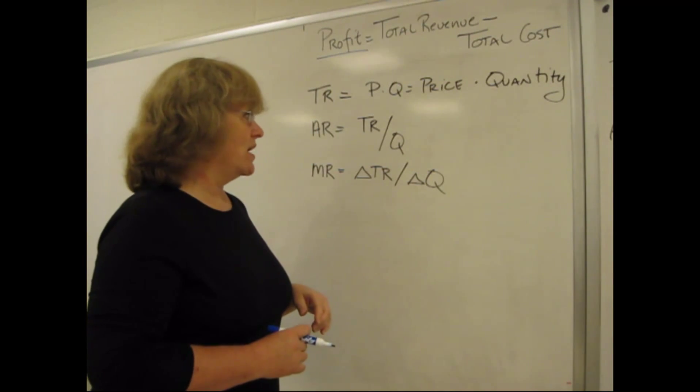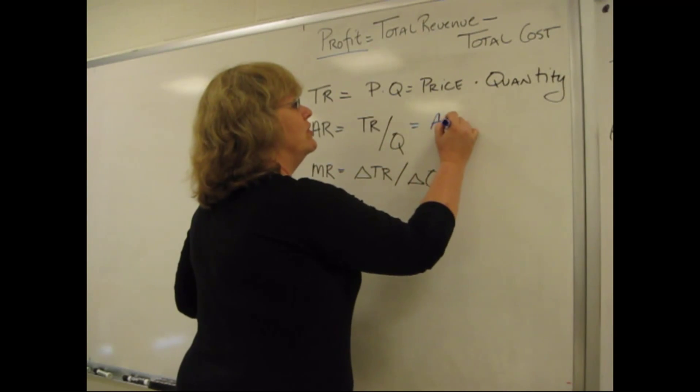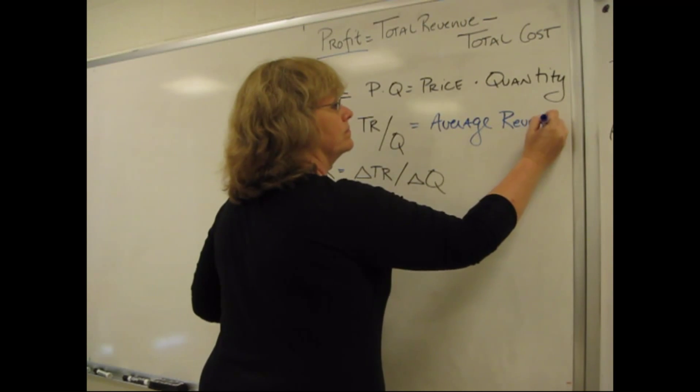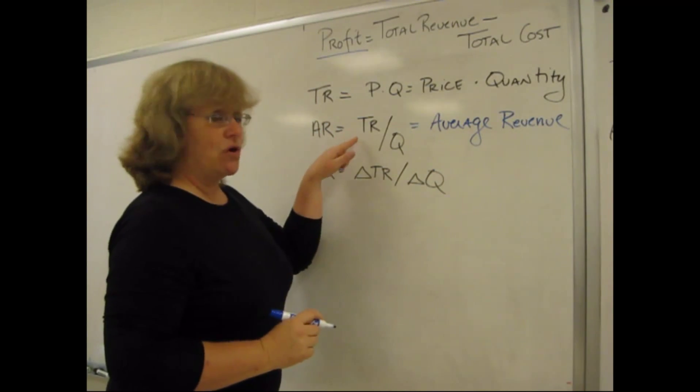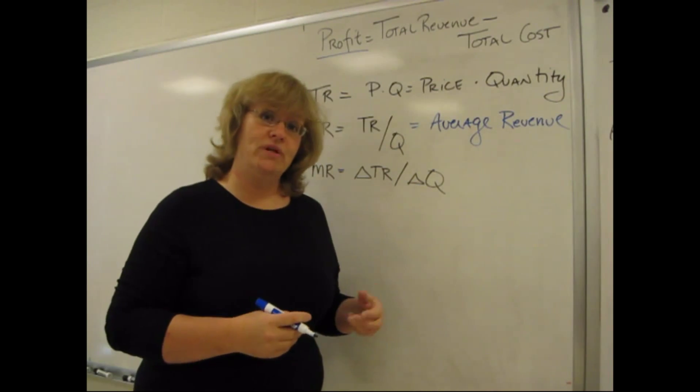AR here is average revenue. And we're going to define that as your total revenue divided by your quantity. So it's revenue per unit.